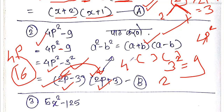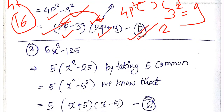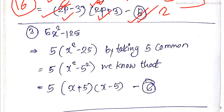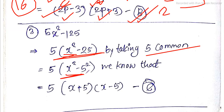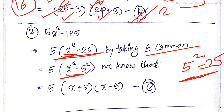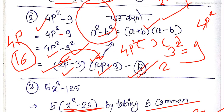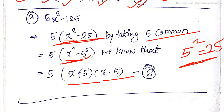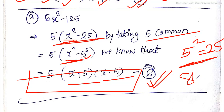For 5x² - 125, we take 5 as common, giving 5(x² - 25), which equals 5(x² - 5²). Applying the difference of squares formula gives the right answer.